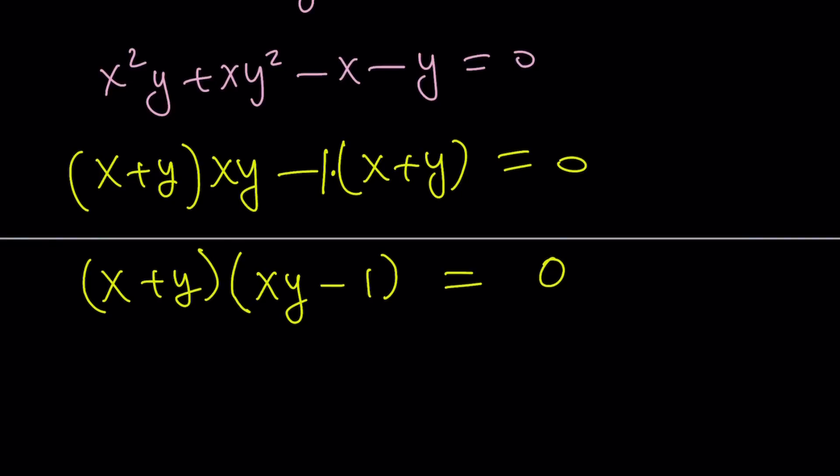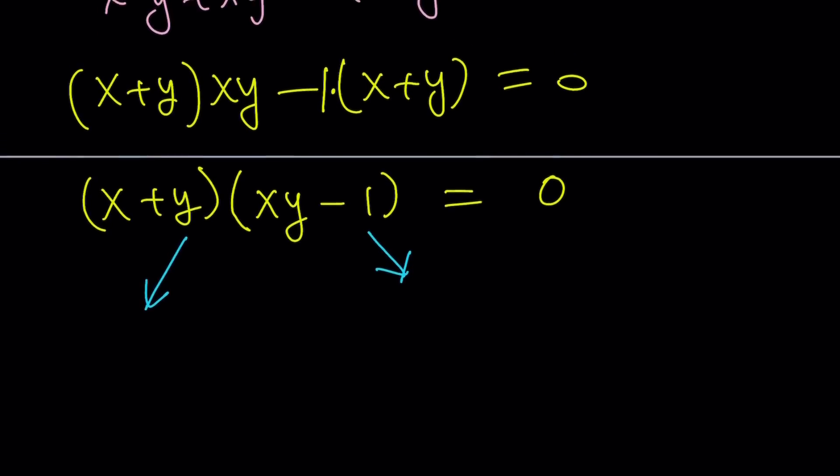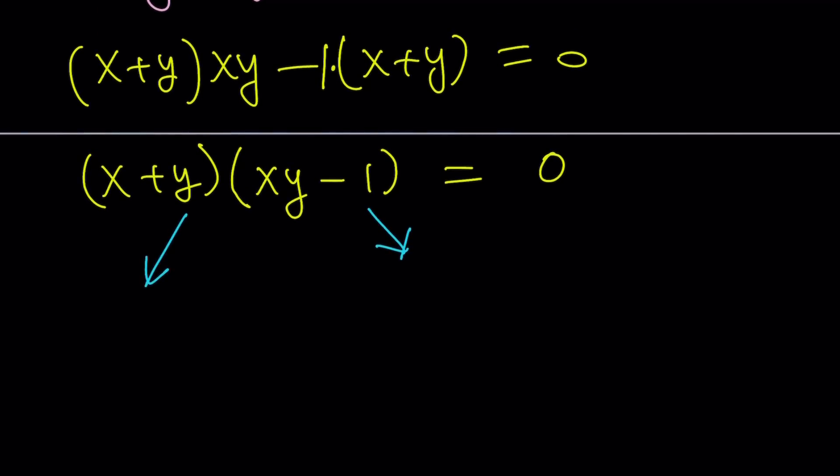Even though we have two variables, we have two factors and the product is 0, so we can use zero product property, which tells us that each of these factors can be set equal to 0. Let's see what that gives us, and then we're going to compare it to our numerical solution.